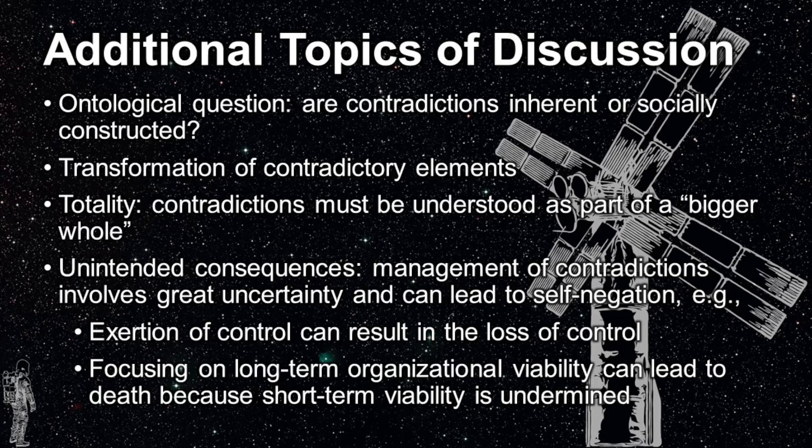The second topic regards the transformation of contradictory elements. Third, the topic of totality describes how contradictions must be understood as part of a bigger whole, describing how contradictions at societal levels of analysis can influence and create contradictions within organizations and at other lower levels. The final topic, unintended consequences, discusses how trying to manage contradictions involves a lot of uncertainty and can lead to self-negation — for example, an overexertion of control can result in the loss of control, or how focusing on long-term organizational viability can lead to short-term death because short-term viability was undermined.